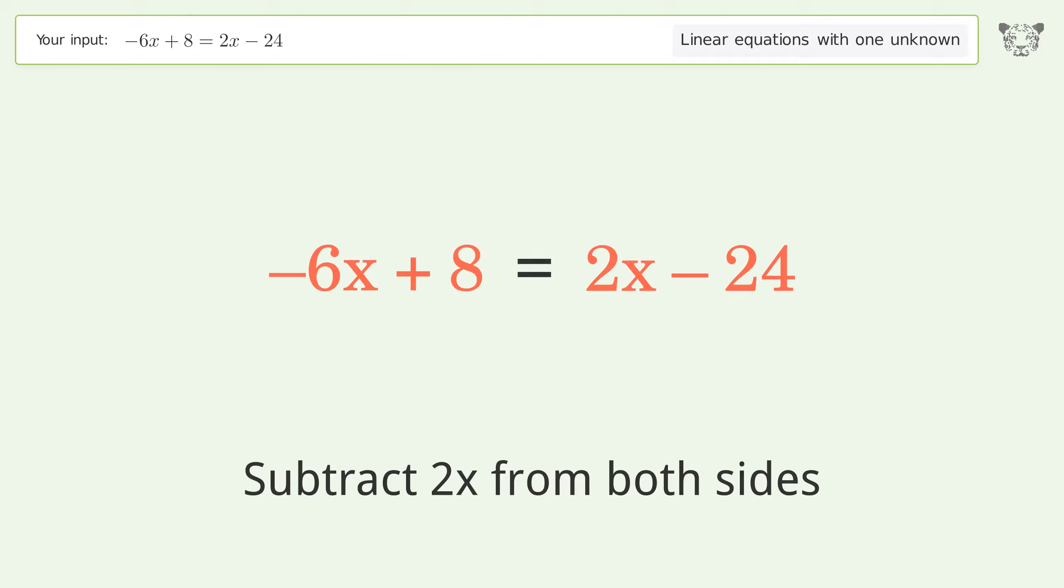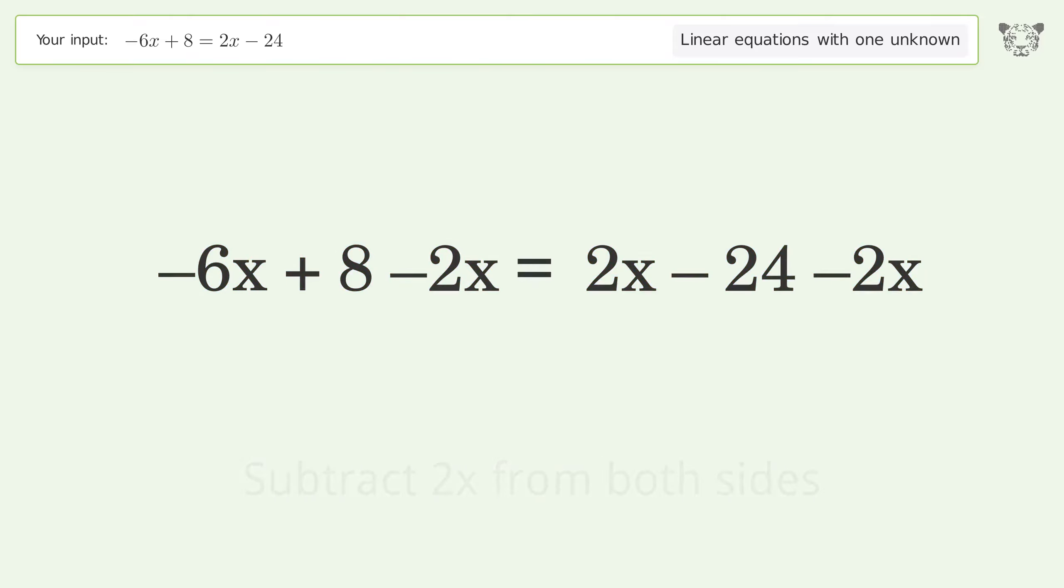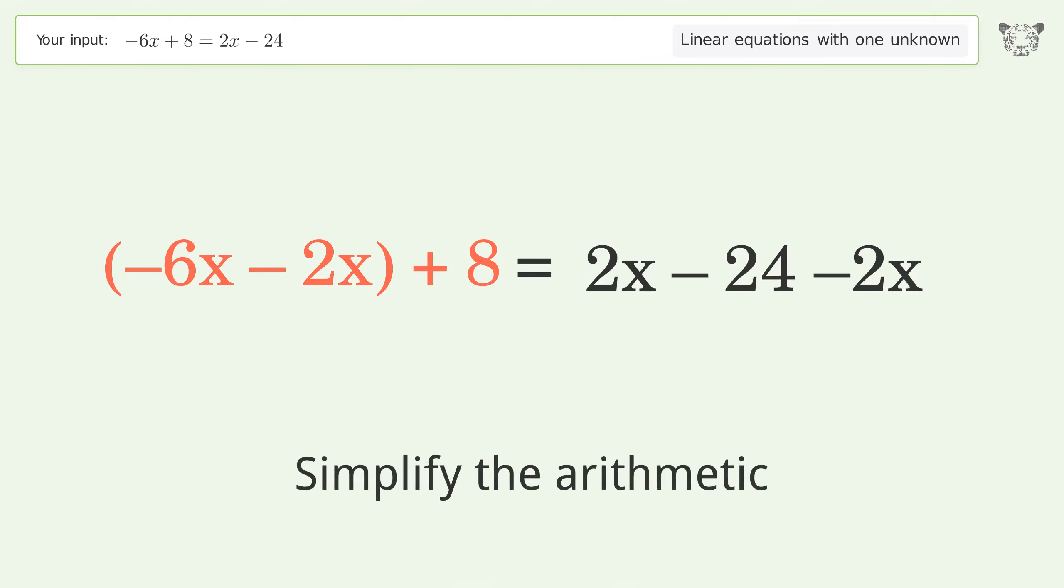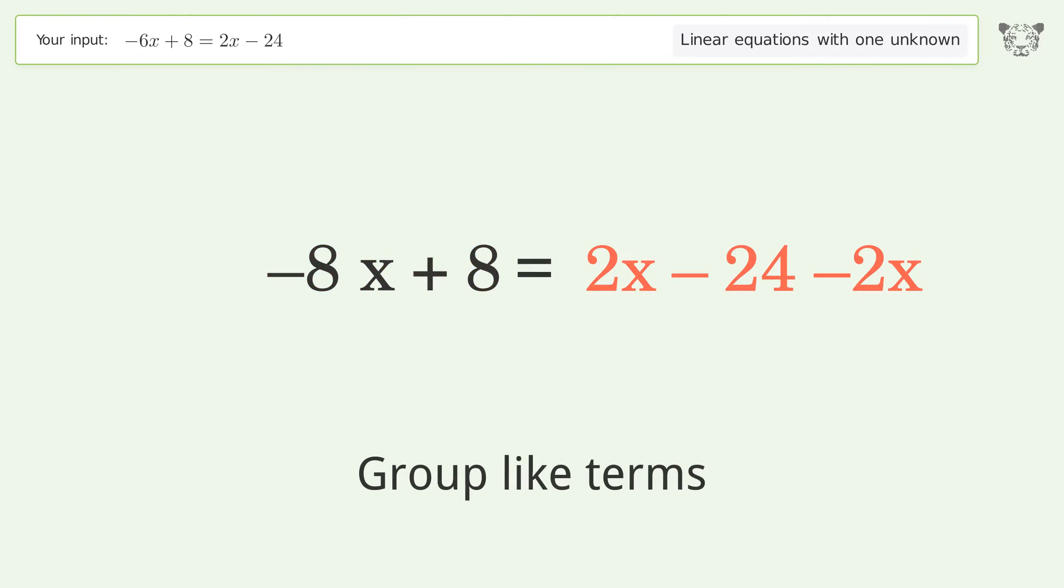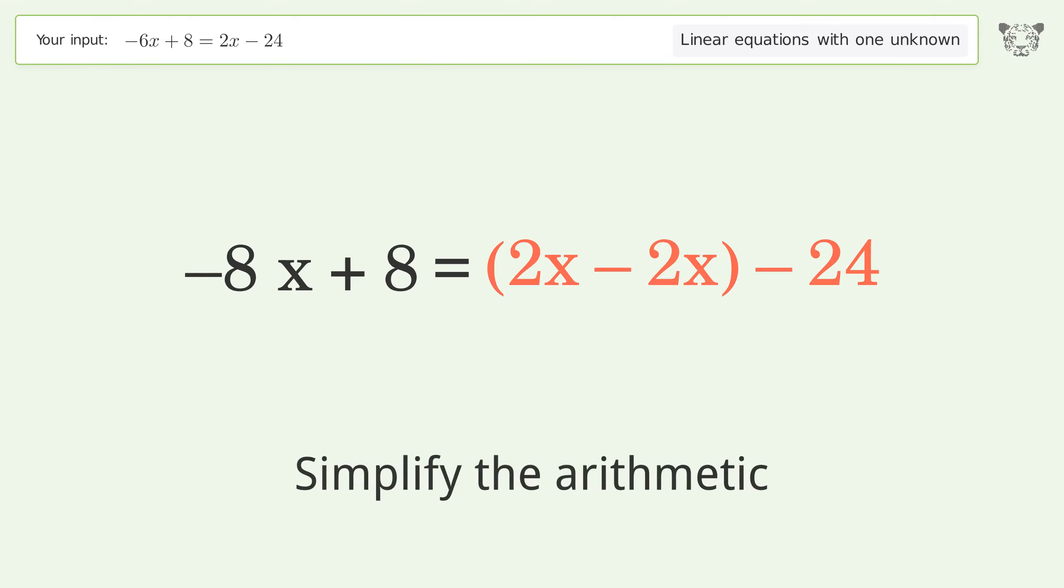Subtract 2x from both sides. Group like terms. Simplify the arithmetic. Group like terms. Simplify the arithmetic.